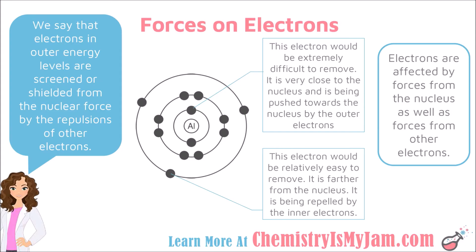While looking at the effect of energy levels on electrons, let's examine a concept called shielding. An electron in the outside energy level is feeling two major forces: it is attracted to the protons inside the nucleus, but it is also repelled by the electrons between it and the nucleus. This makes an outer electron fairly easy to remove — it is farther from the nucleus and being repelled by the inner electrons. This concept is called shielding: outer electrons are shielded from the nucleus by the inner electrons.